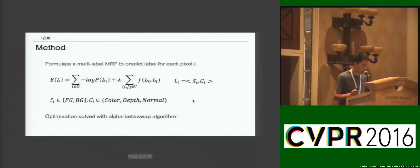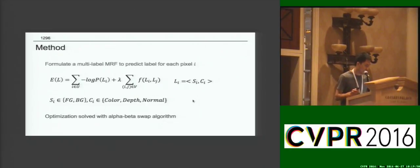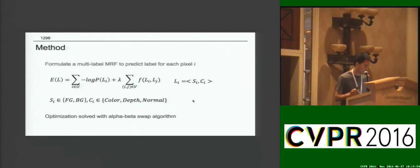We try to predict a label pair for each pixel which contains a segmentation label and a cue label. We formulate it as a multi-label Markov random field for the optimization, which can be solved with the alpha-swap algorithm.